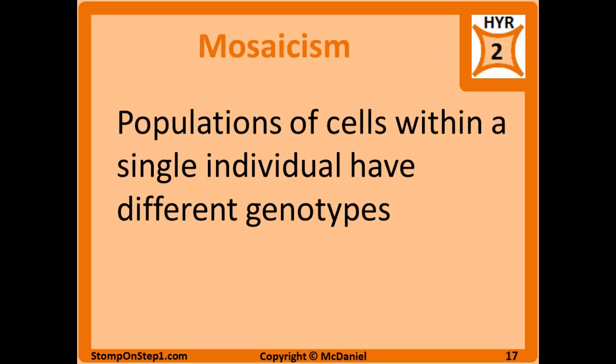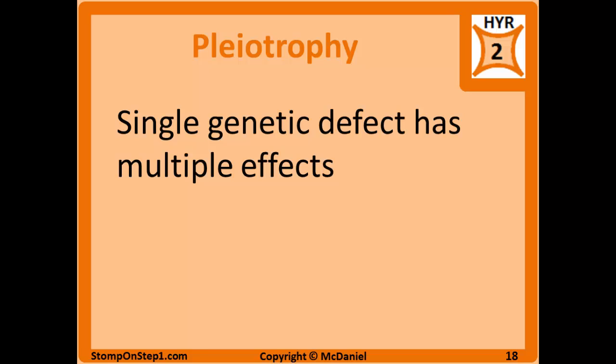Mosaicism is when populations of cells within a single individual have different genotypes — different genetic makeup — due to post-fertilization changes to those genes. In most cases it's some sort of chromosomal abnormality caused by improper mitosis. Germline mosaicism is when only gametes — sperm and eggs — are affected by the genetic defect, so the individual themselves won't show any signs of the disease but could pass it on to offspring. Pleiotropy is when a single genetic defect can affect lots of different parts of the body across multiple organ systems, because that gene is expressed in multiple different organ systems.